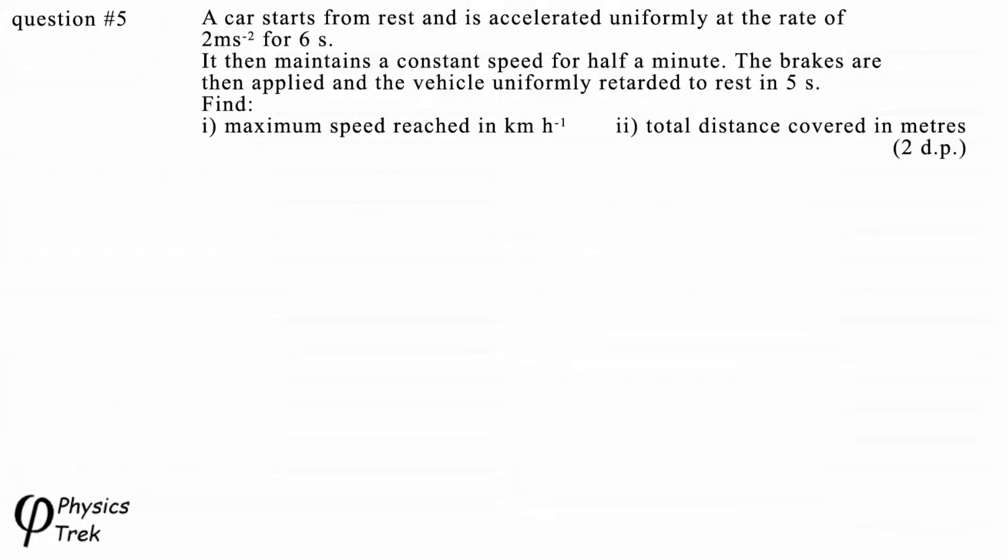So here are the equations of motion and their quantities in blue down the side for quick reference. Writing out the information given in symbol form: U₀, original velocity, 0 m/s; a, the acceleration, 2 m/s²; tₐ, time for acceleration, 6 seconds; t_const, the time where velocity is constant, 30 seconds.